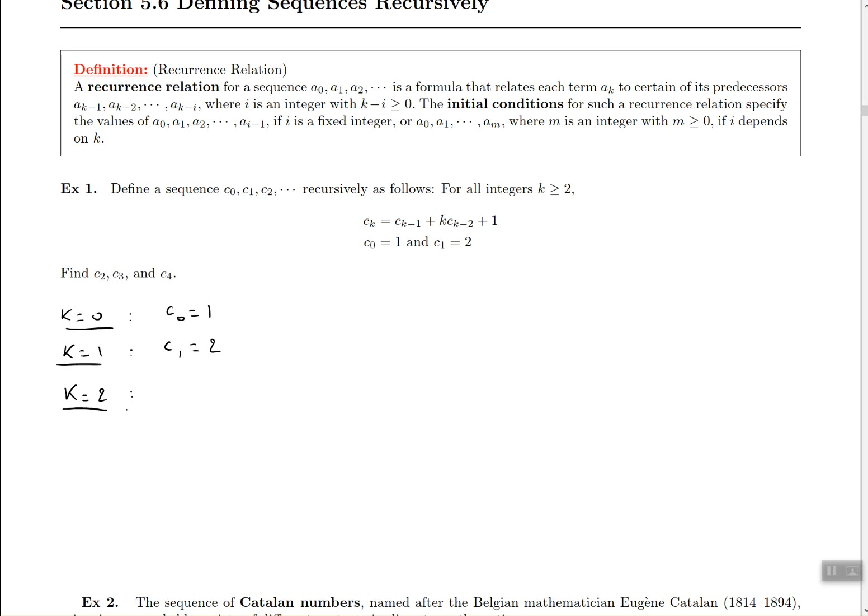Now what about when k is 2? When k is 2, that means I'm looking for C2 at this point and I have to go off the definition. So it says C2 minus 1 plus 2 times C2 minus 2 plus 1 on the outside. Why? Because k is now 2 and I'm supposed to replace all the k's in my formula with 2. So all the k's get replaced with 2. At this point we end up with something that could be simplified: C1 plus 2C0 plus 1.